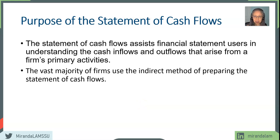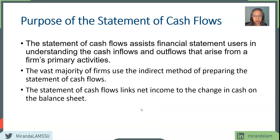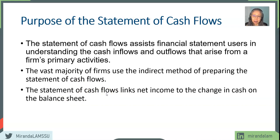Most companies — the vast majority — use the indirect method. Because with the indirect method, the statement of cash flow will link the income statement and changes in the balance sheet to changes in cash. This provides relevance and evidence, which are important characteristics of accounting and financial information. So we have collaboration and reconciliation between the three statements: the statement of cash flow, the income statement, and the balance sheet.